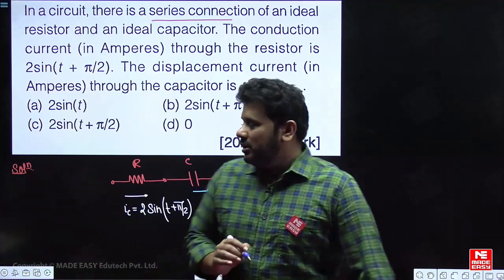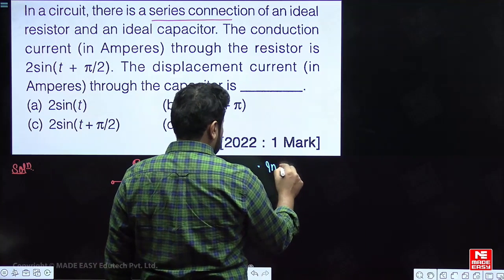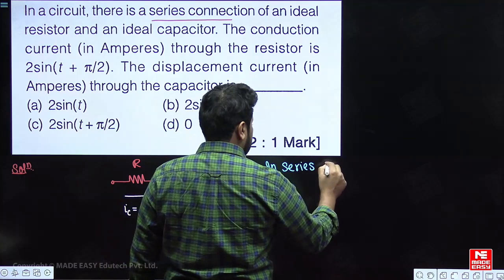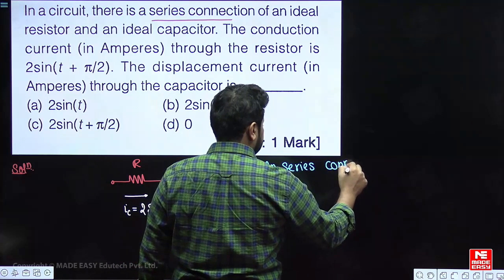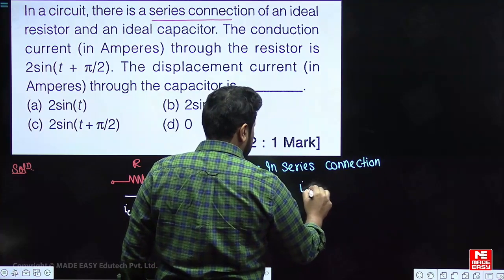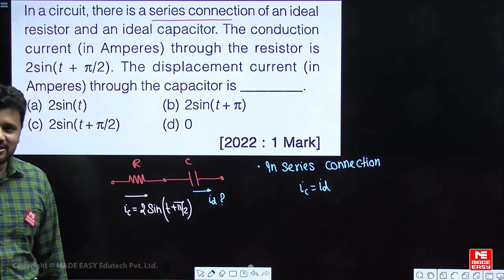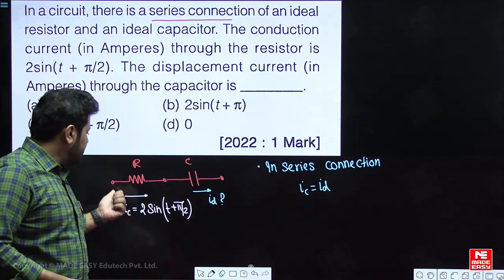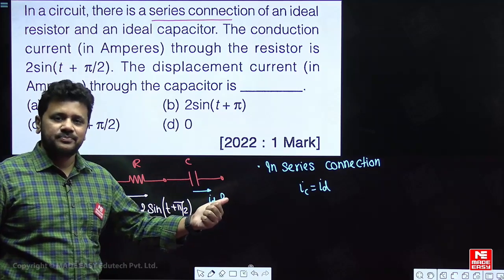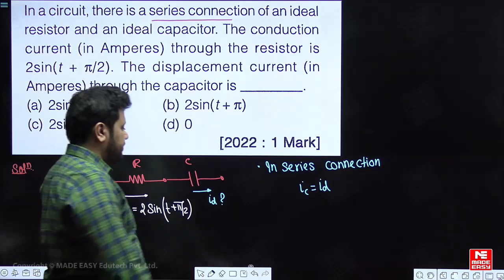We know that in a series connection, current remains the same. So Ic must be equal to Id, because current cannot change in a series connection. Whatever current is flowing through the resistor, the same current has to flow through the capacitor. So Ic should be equal to Id.